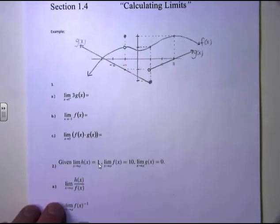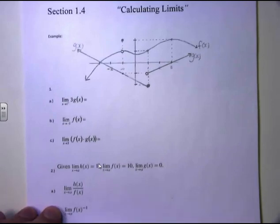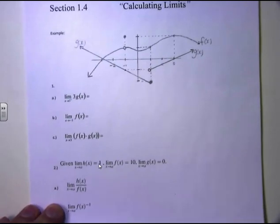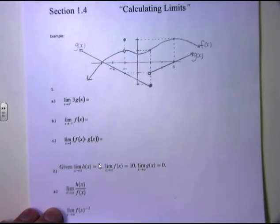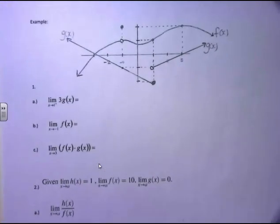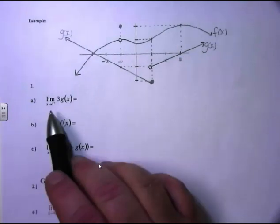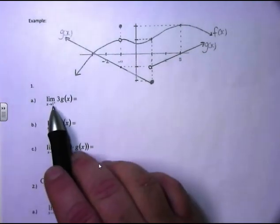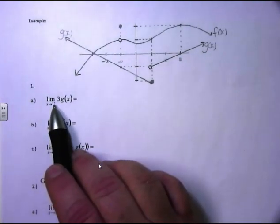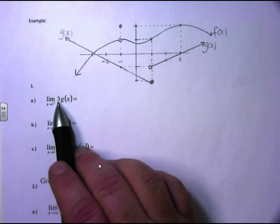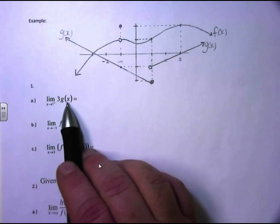So, our first problem here — let's see if I can blow it up for you so you can see it a little better. What we're going to do here is take the limit as x approaches 1 from the positive side, or the right side, of 3 times g of x.